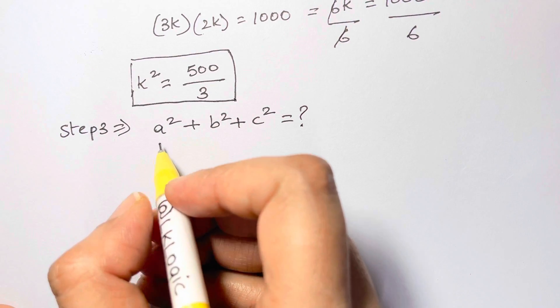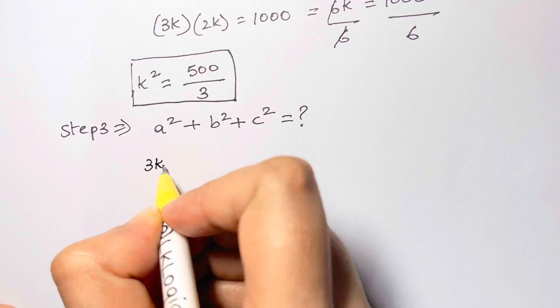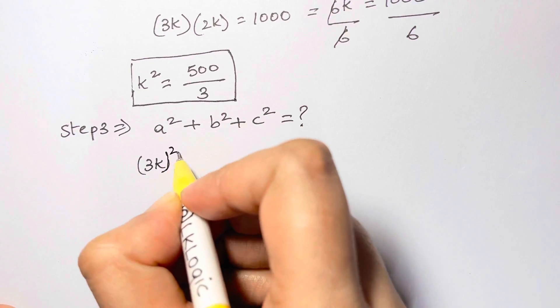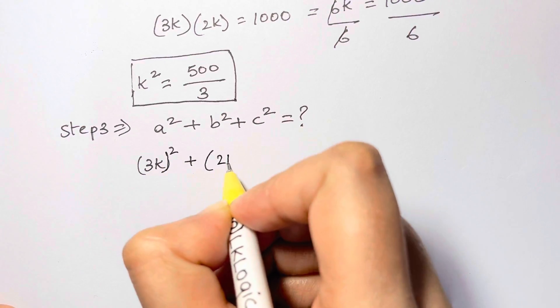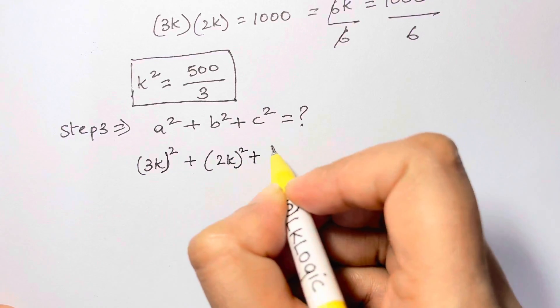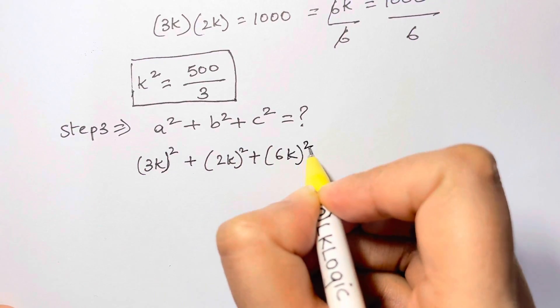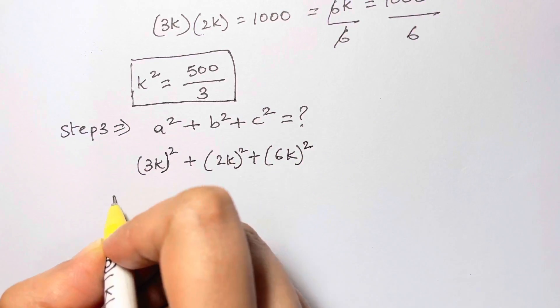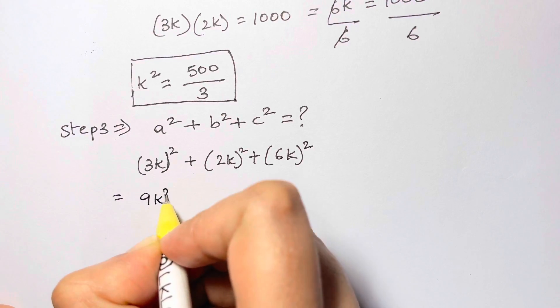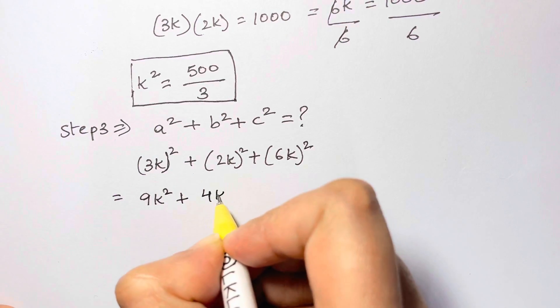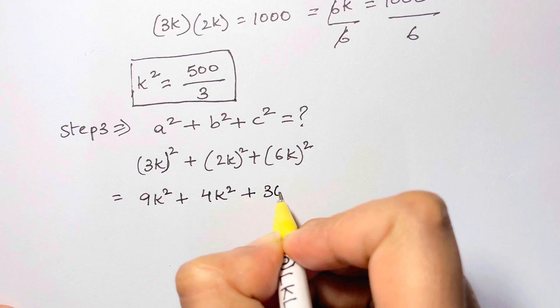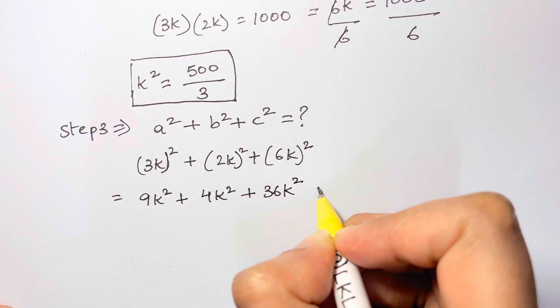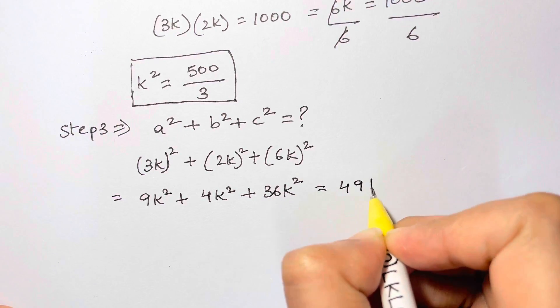So let me write it down. 3k, the whole squared, plus b is 2k. 2k, the whole squared, plus c is 6k. 6k, the whole squared, which is equal to 9k² plus 4k² plus 36k², which is equal to 49k².